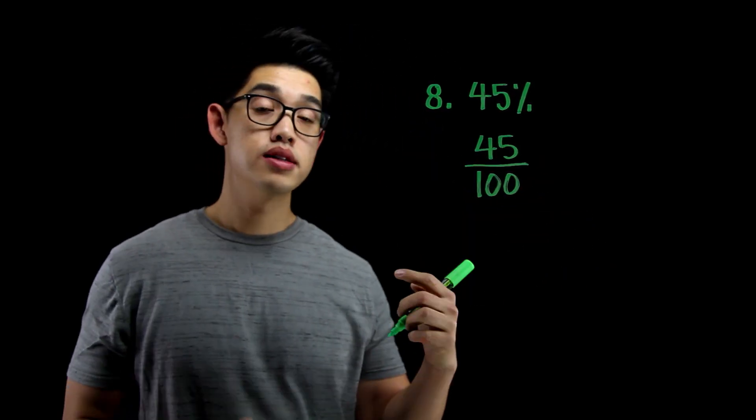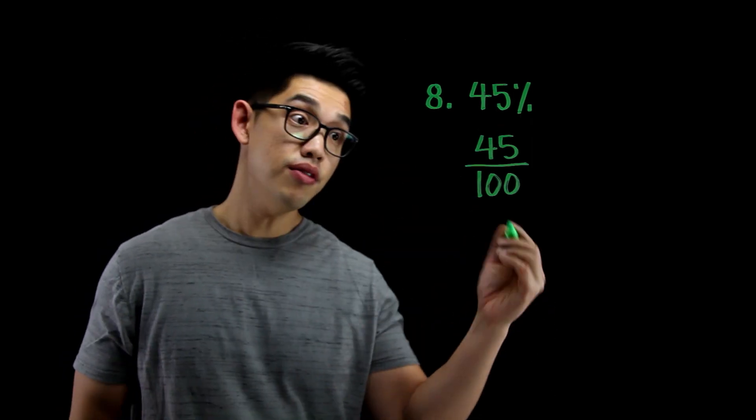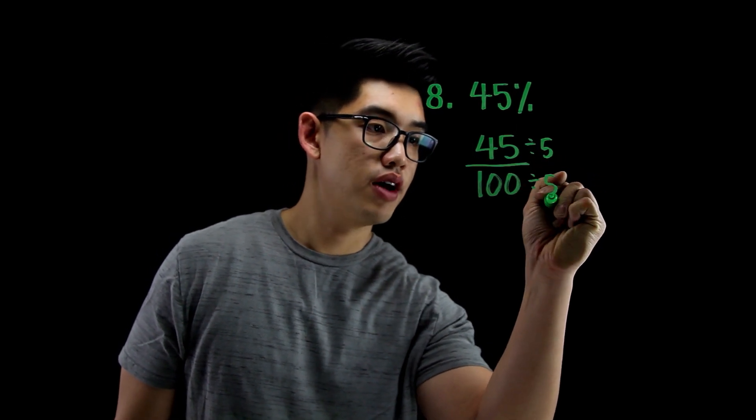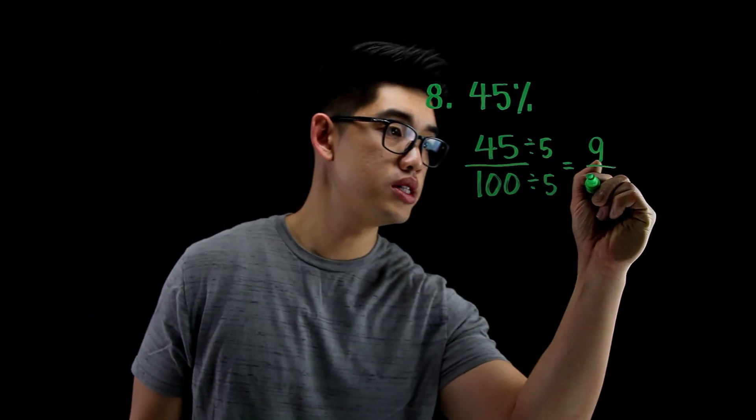Once I have this, I need to write it in its simplest form. I can divide the top and bottom by, let's say 5. So divide this top by 5 and divide this by 5. Again, we're just simplifying, making it into an equivalent fraction by dividing by 1. 5 over 5 is 1. 45 divided by 5 is going to be 9. And 100 divided by 5, that's going to be 20.